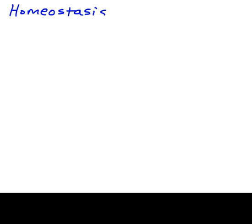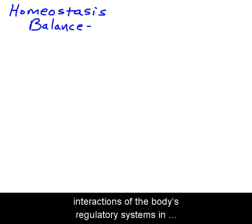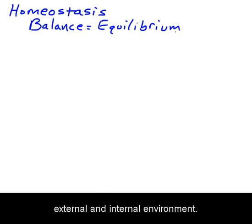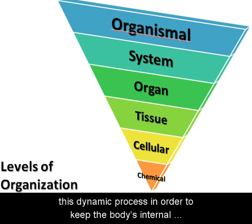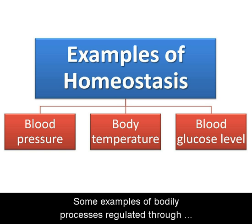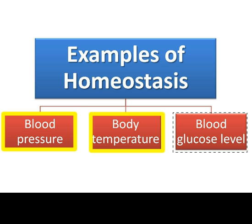Homeostasis is the body's ability to maintain a balanced internal environment. This balance or equilibrium is maintained through the interactions of the body's regulatory systems in response to changes constantly taking place in the external and internal environment. Every level of the body's organization participates in this dynamic process to keep the body's internal environment within a normal range. Some examples of bodily processes regulated through homeostasis include blood pressure, body temperature, and blood glucose level.